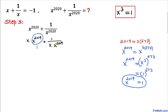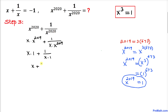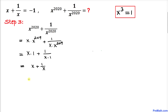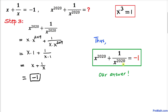Substituting x to the 2019 equals 1 back into our expression: x times 1 plus 1 over x times 1, which simplifies to x plus 1 over x. From our original equation, x plus 1 over x equals negative 1. Therefore x to the power 2020 plus 1 over x to the power 2020 equals negative 1.